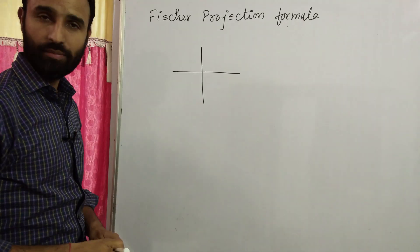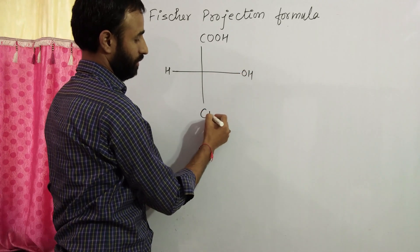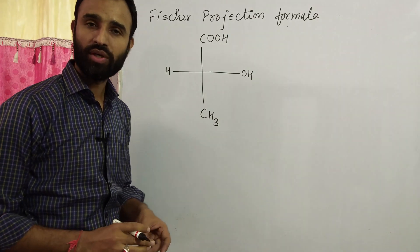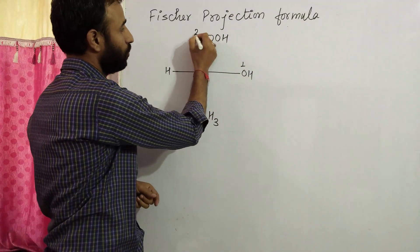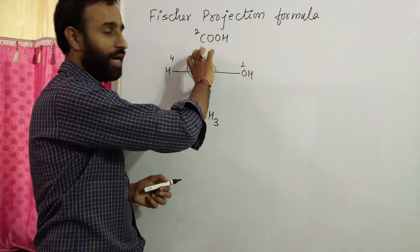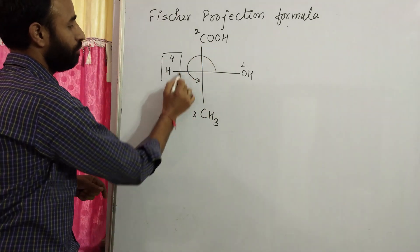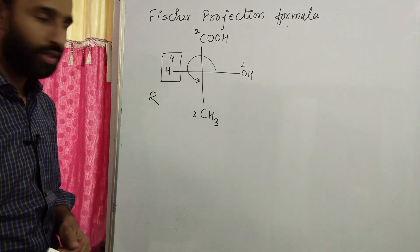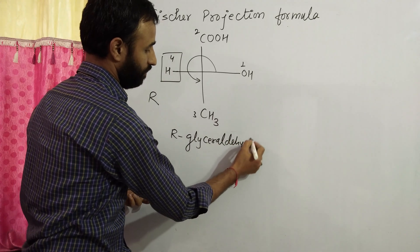For example, if I write glyceraldehyde — this is number 1, CHO, because the oxygen is there, then 2 and 3. So 1, 2, 3 — anti-clockwise, and the lowest priority atom is in the horizontal position. That means it is R. This is R-glyceraldehyde.